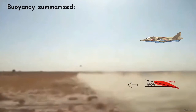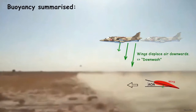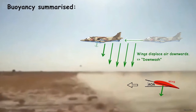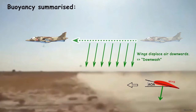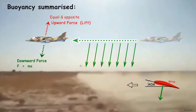In stable flight, wings with a positive angle of attack displace air downwards and slightly forwards to create a downward force, and thus generate enough equal and opposite upward force for the plane to fly.